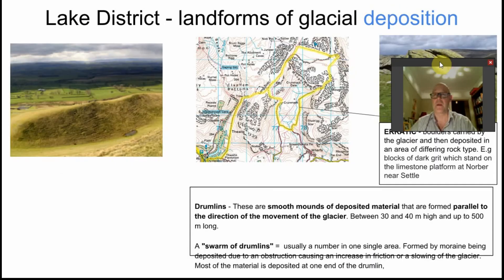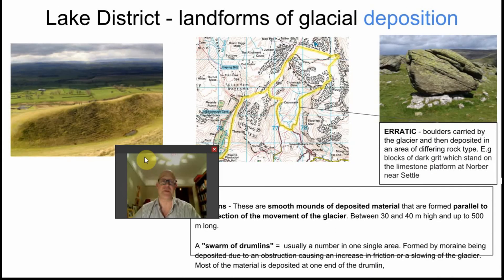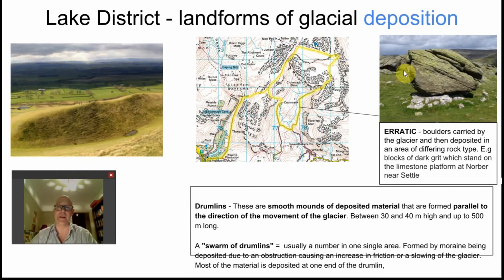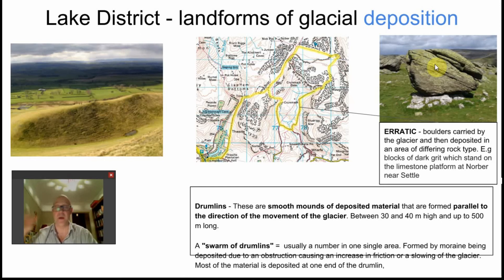What about deposition? The most obvious feature is the erratic — rocks in the wrong place. Here you can see the most famous field of erratics. There are a few in here, and this is in a place called Norba. They're known as the Norba erratics and they're found near Settle, and that's where this image is taken from. You won't see them showing up individually on an OS map, of course, because they're just too small.